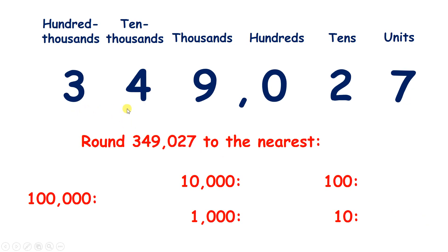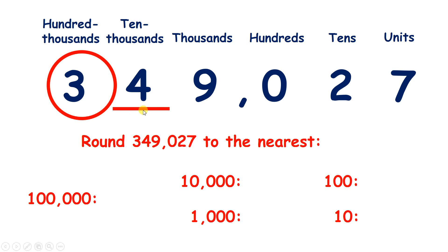Now we have 349,027. Rounding to the nearest 100,000, we find the place, look next door — we have 4, so we're rounding down, which means that 3 in our 100,000s column will stay the same, and all the other numbers to the right will turn to 0 — so we have 300,000.